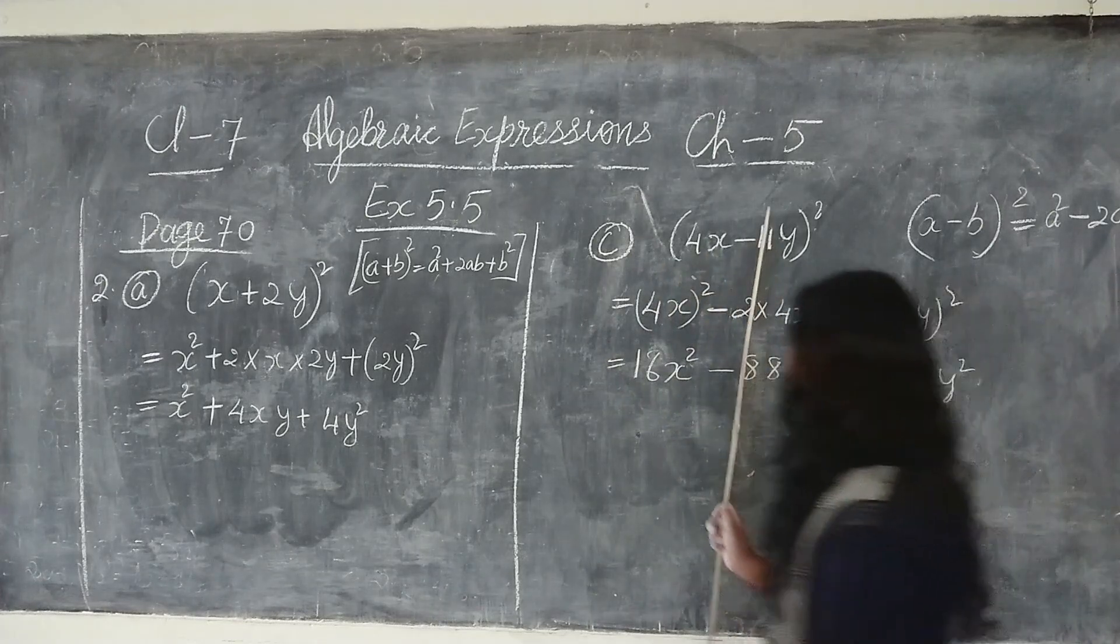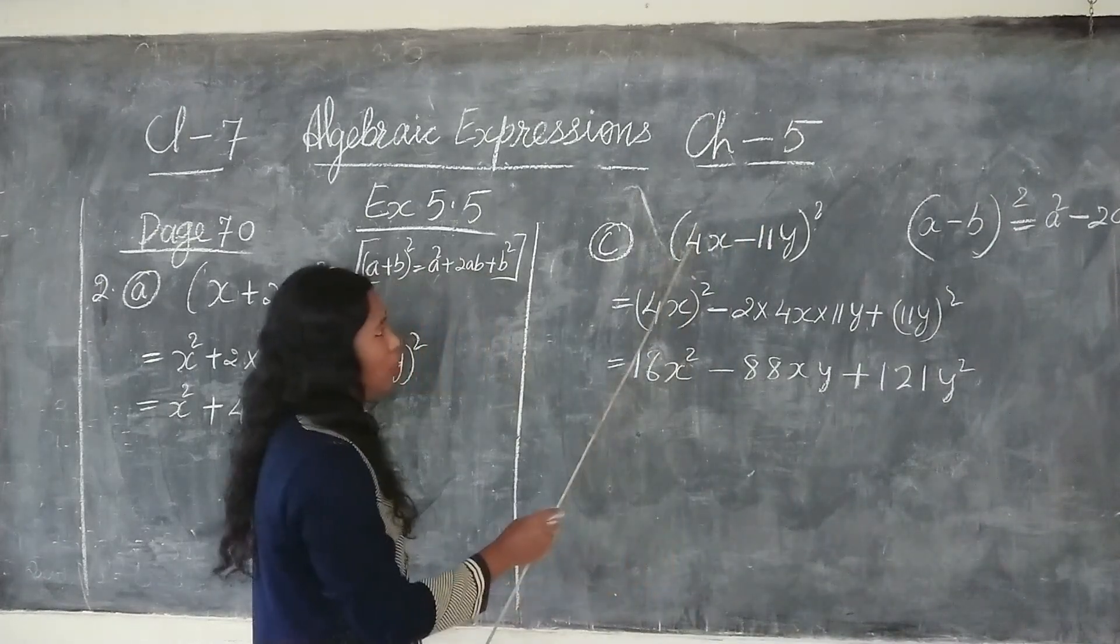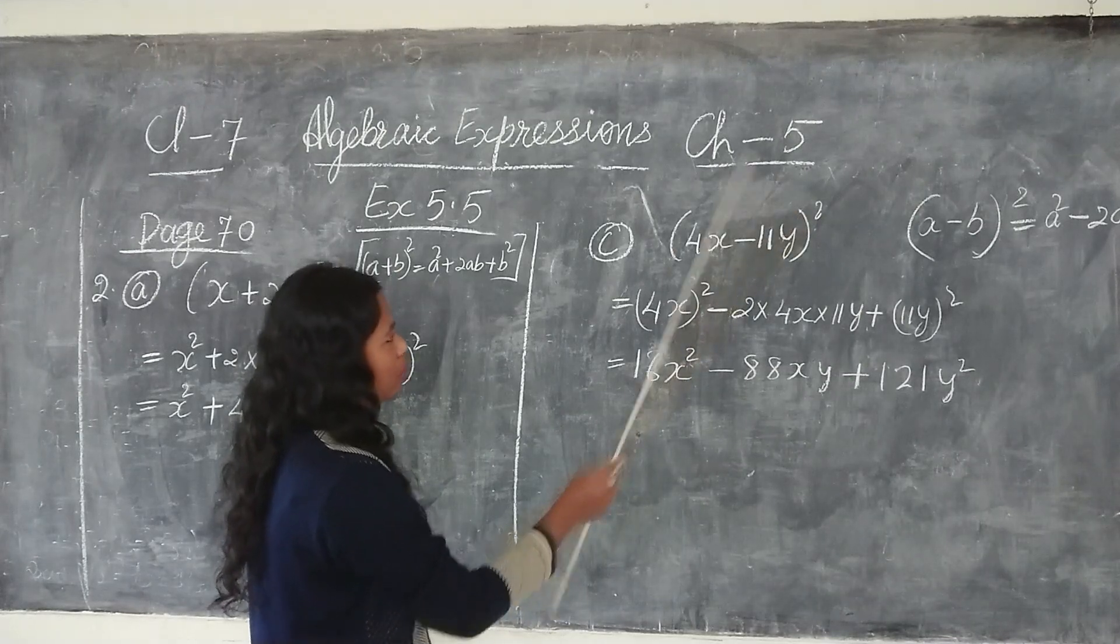Next, number c. Here also this, 4x minus 11y whole square.